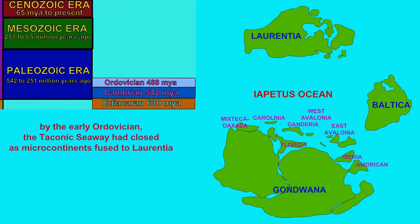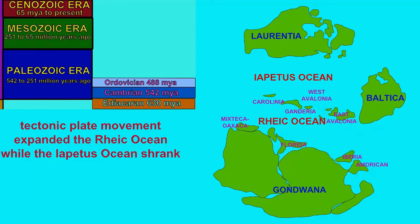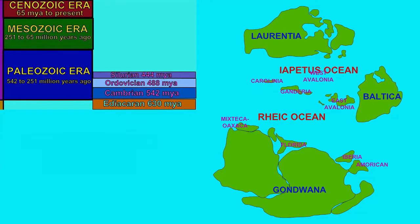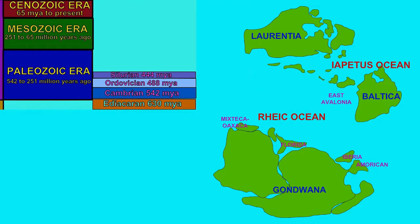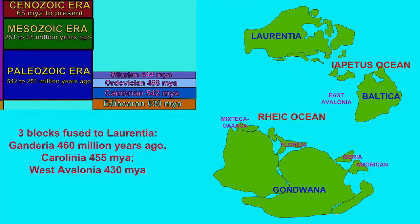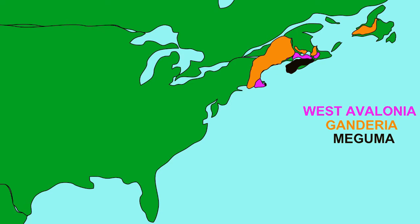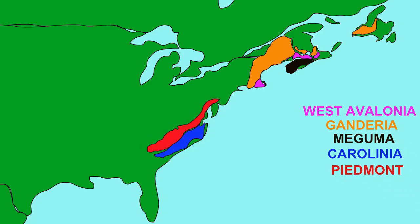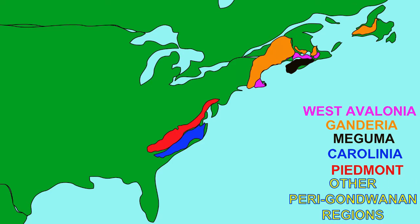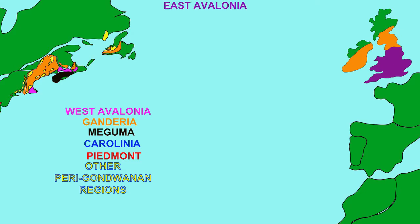For example, in the case of the Appalachian Mountains — how were they constructed? It turns out there were three separate mountain-building periods. First, microcontinents and island arcs which were in the Iapetus Ocean, which was narrowing and being subducted, struck the North American nucleus of Laurentia and were fused to a large degree to the mainland.